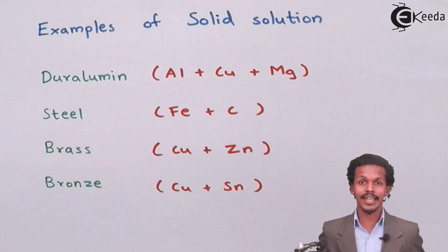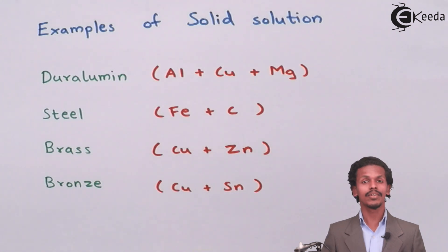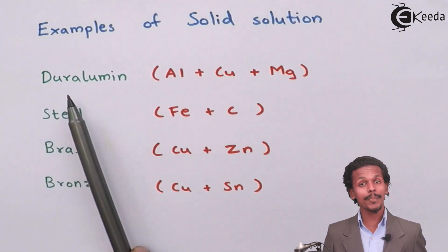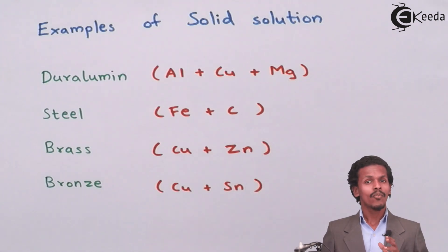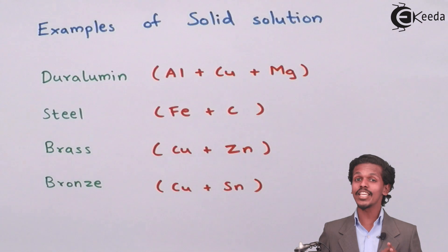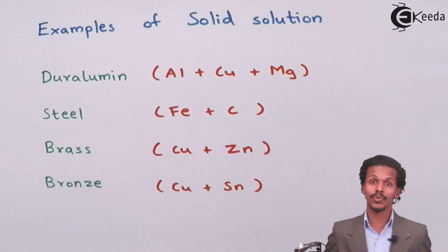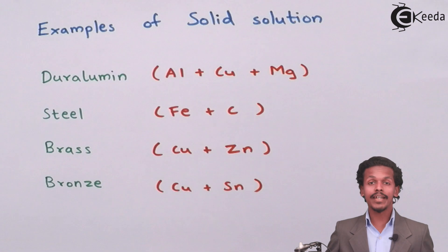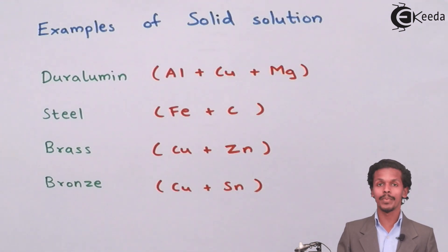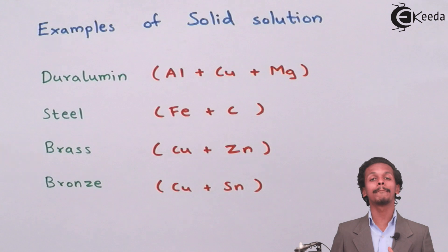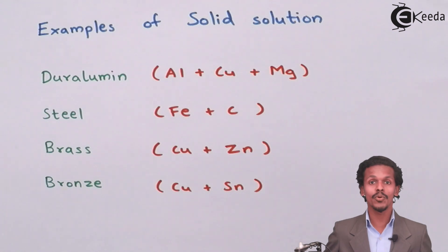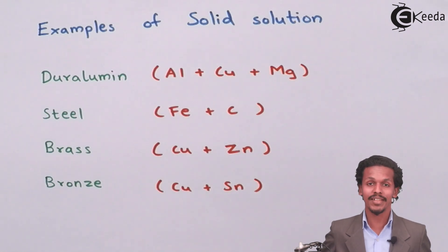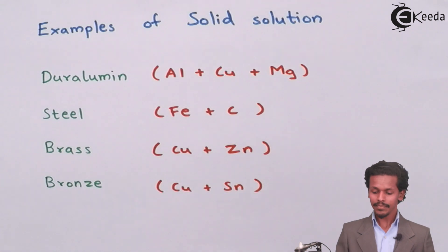These are a few examples you can see on your screen — they are known as alloys or solid solutions. Among them is duralumin, which is made up of aluminium, copper and magnesium. It is used in aircrafts because it is lighter and stronger than aluminium alone, achieved by doping with copper and magnesium.